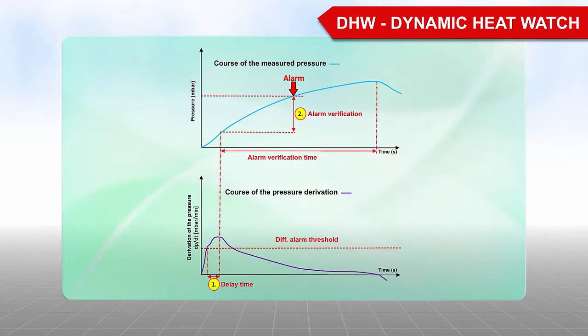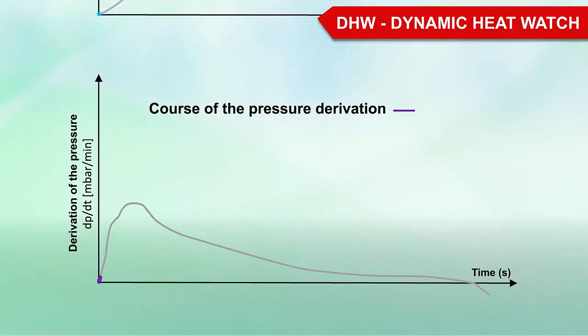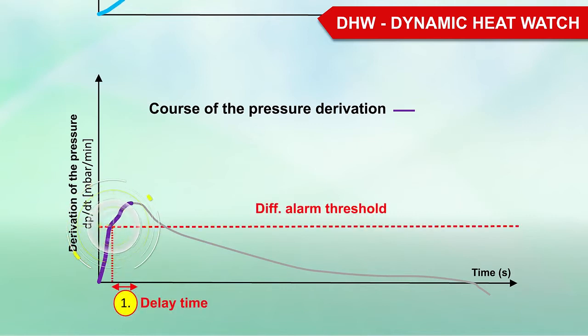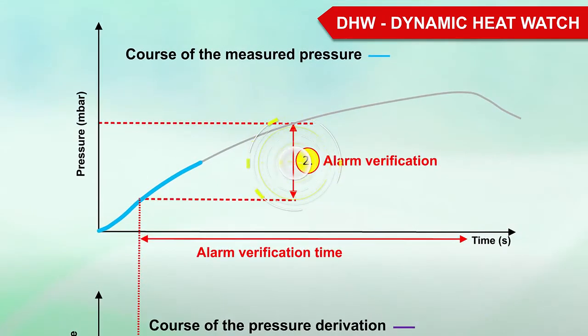The intelligent DHW dynamic heat watch algorithm on the ADW-535 ensures that rapid increases in temperature caused by the ambient conditions do not result in a false alarm. First, the pressure gradient is considered. If the rate of rise of the pressure exceeds the configured limit DIFF ALARM threshold, the delay time is started. If this limit value remains exceeded during the defined time, the alarm verification algorithm is started. In a second step, the pressure is expected to increase by the ALARM VERIFICATION value. If this is the case, it is a fire and the alarm is triggered.